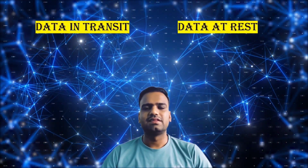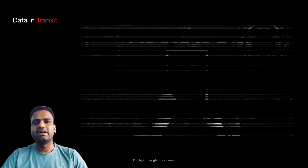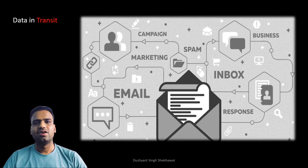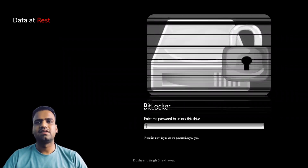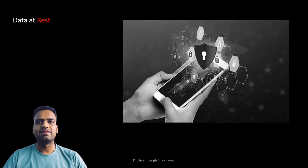Encryption is used for securing data at various stages — encryption of data at rest and data in transit. Data in transit encryption is required when sending data over the internet, such as logging into a website, sending data over a wireless network like Wi-Fi, public Wi-Fi, or sending data through email. Data at rest includes full disk encryption through BitLocker, database encryption, or mobile device encryption.